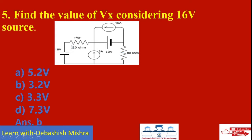Here 20 ohm and 80 ohm are in series, so we apply the voltage division rule. Voltage division rule: 16 volts times 20, divided by 20 plus 80. So 16 times 20 is 320, divided by 100. The answer is 3.2 volts. Answer is (b): 3.2 volts.